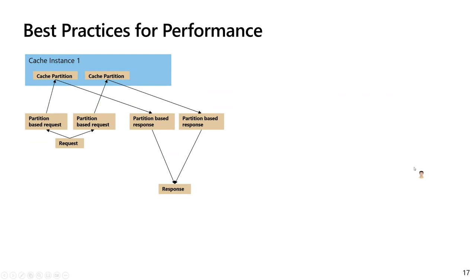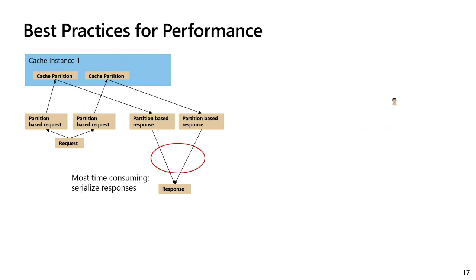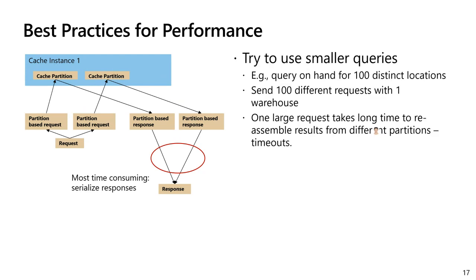Despite its good general performance, we do have some best practice suggestions for Inventory Visibility. Firstly, despite partitions being good at handling individual requests, requesting too many partitions at one time degrades response time — because we need to deserialize and reassemble responses into one single response, introducing unwanted extra delay. As a best practice, for example when querying on-hand data for 100 warehouses at the same time, we always suggest posting 100 individual requests with one warehouse specified in each request, rather than one very large request putting all 100 warehouses in the same request.